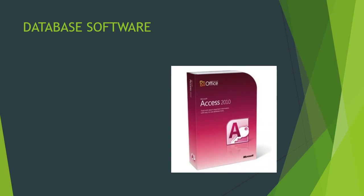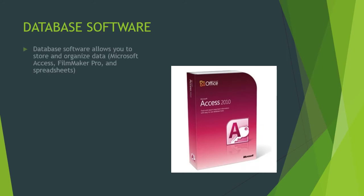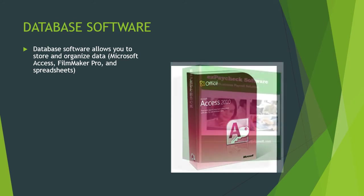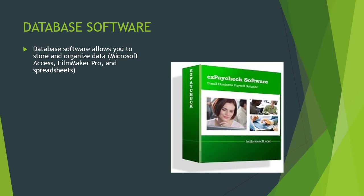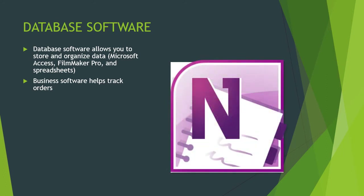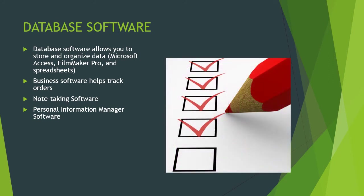Database software such as Oracle, MySQL, and Microsoft Access are powerful applications that allow you to store and organize data, even in Filmmaker Pro spreadsheets. You need to use more robust, fully-featured database applications to manage larger and more complicated groups of data than one table. Business software helps you track orders like FedEx and UPS. For students, note-taking software such as OneNote is popular, easy to use, and helps you organize your notes. Then there's Personal Information Manager, which helps you with calendars and to-do lists for everyday life.